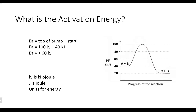Going back to the previous example: we've got a 60-kilojoule activation energy for the forward reaction. But with the reverse reaction, now we're starting at a slightly lower spot — we're starting at 20, and we still need to get to 100. So with the reverse reaction, we would have an activation energy of 80 kilojoules.